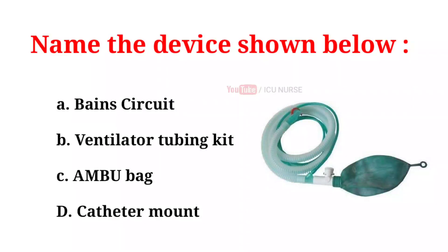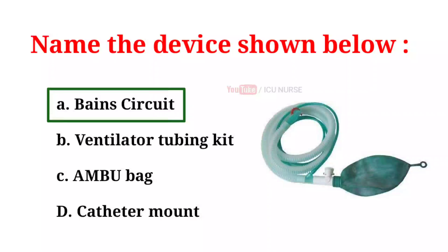Name the device shown below. A. Bain circuit. B. Ventilator tubing kit. C. Ambu bag. D. Catheter mount. And the correct answer is A. Bain's circuit.